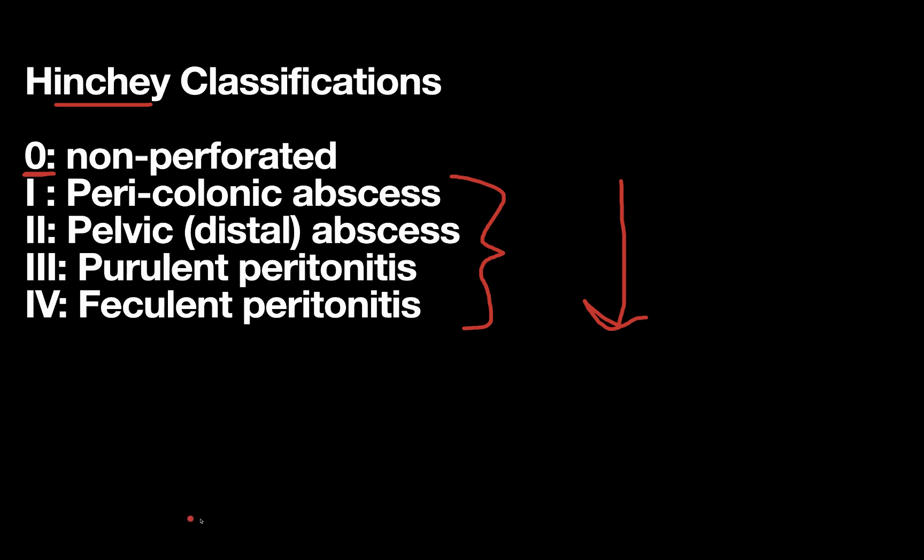For example, if you're picturing the colon here, obviously non-perforated diverticulitis, maybe you have just this little outpouching, and there's just a little bit of inflammation on your CT scan, but no obvious abscess, no obvious perforation, that would be a Hinchey zero.